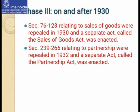Phase 3 began after 1930. Originally, this act also covered the area dealing with sale of goods, but due to inconvenience — as the Indian Contract Act was not able to deal successfully in the area of sale of goods — sections 76 to 123 relating to the sales of goods were repealed in 1930, and a separate act called the Sale of Goods Act was enacted. Then in 1932, a separate act was enacted for partnership, called the Partnership Act, comprising sections 239 to 266.